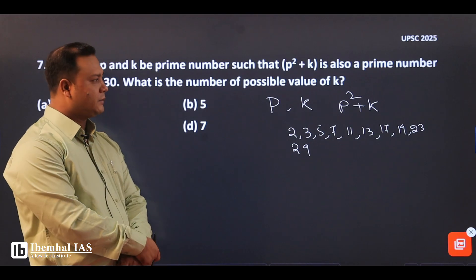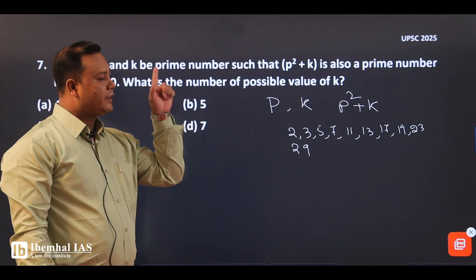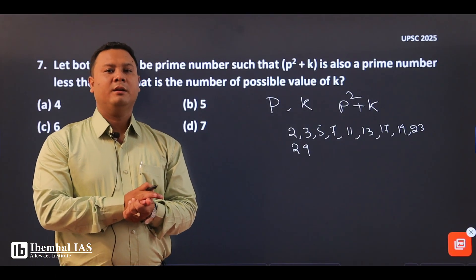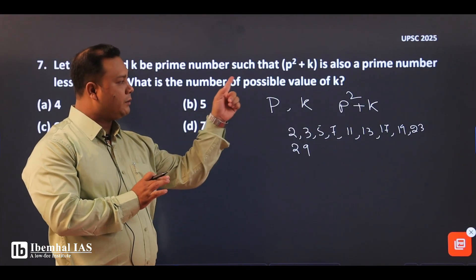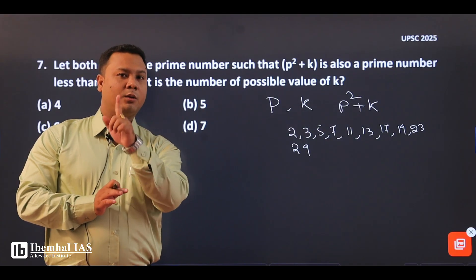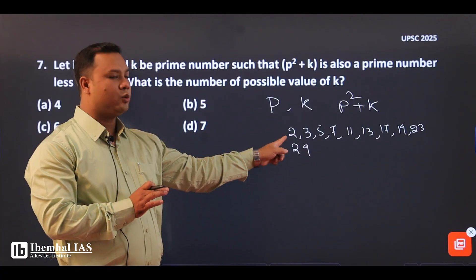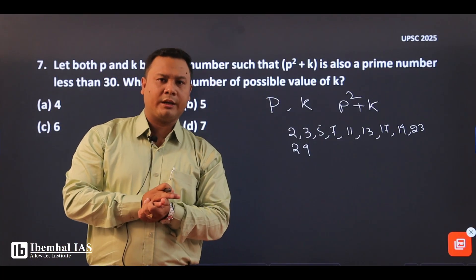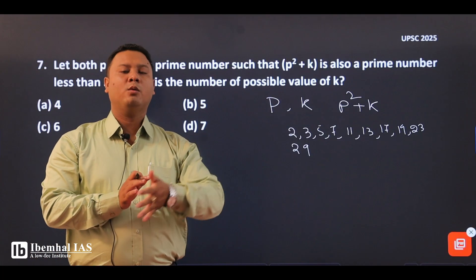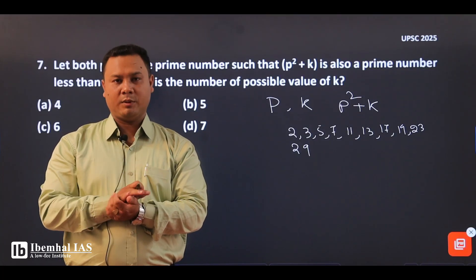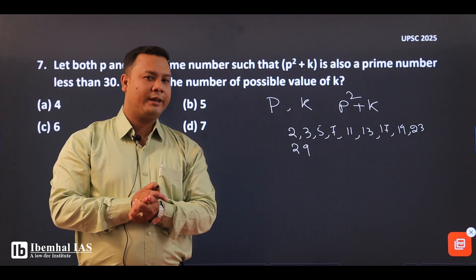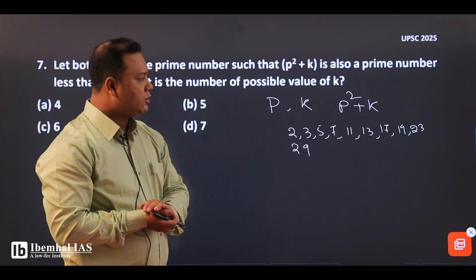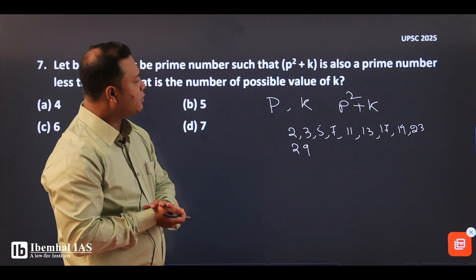Since p squared plus k must be a prime number, the key insight is: the only even prime number is 2. If p squared is an even number, adding k must still yield a prime. The acquired condition means only one number can be the even prime.